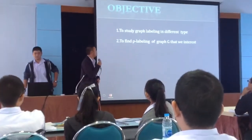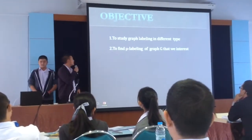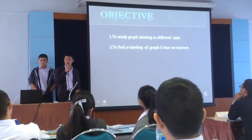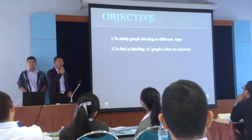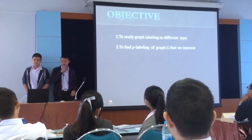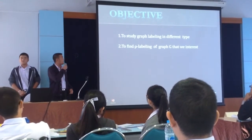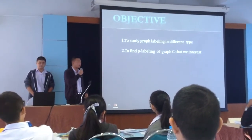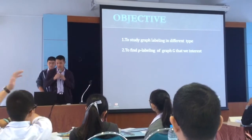Our objective. First, we will study about graph labeling in different types. And next, we will find a low labeling graph key, that means the graceful labeling.